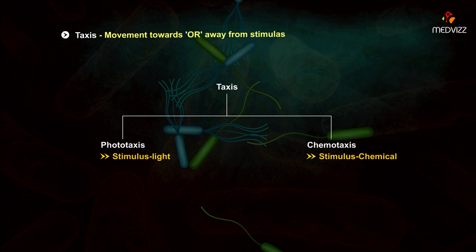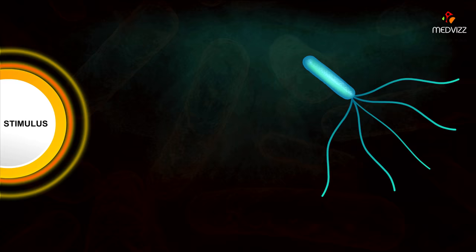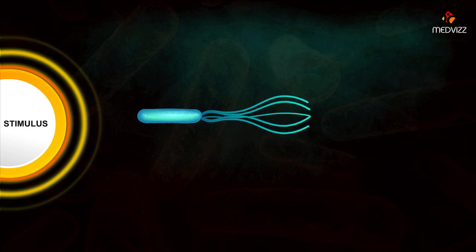In either case, the bacterium contains receptors which send signals to the flagella. In the case of positive taxis or motion toward the stimulus, tumbles become less frequent when the cell moves toward the stimulus and more frequent when the cell moves away from the stimulus.